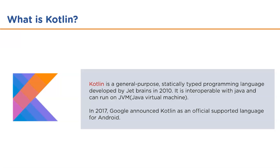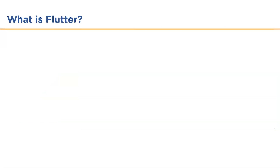Just like the Java compiler, the Kotlin compiler also generates bytecode which can run on the JVM (Java Virtual Machine). Kotlin is a very easy and friendly language, developed by selecting good features from different languages like Java, JavaScript, C#, etc. In 2017, Google announced Kotlin as an official supported language for Android.